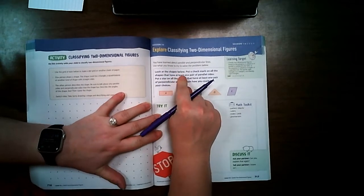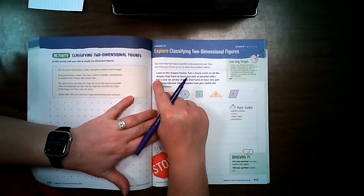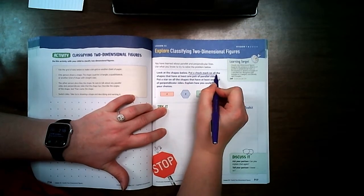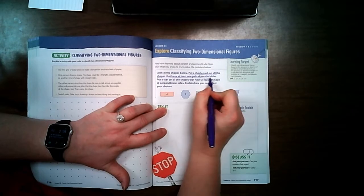Look at the shapes below. Put a check mark on all the shapes that have at least one pair of parallel sides. So here's our first step. Let's stop here and do this one first.